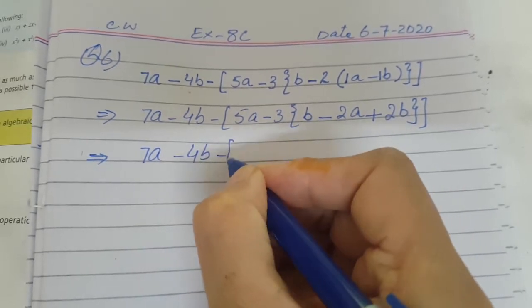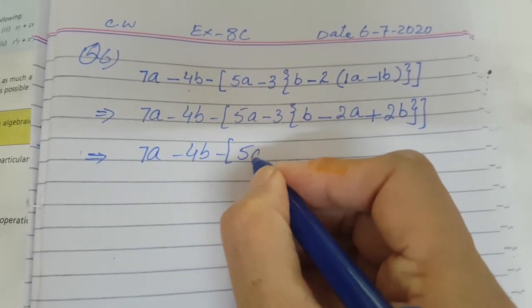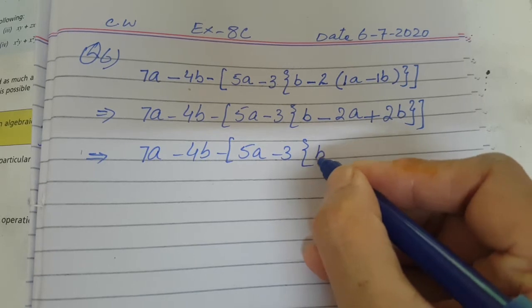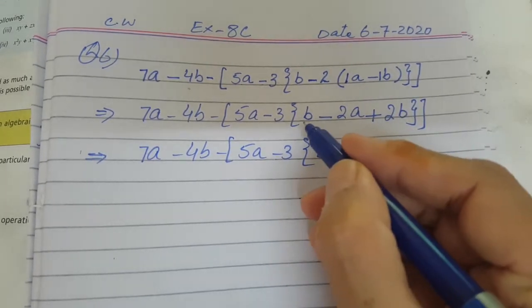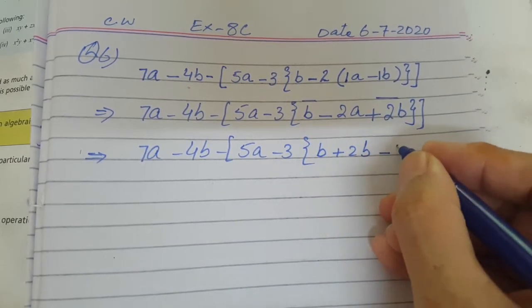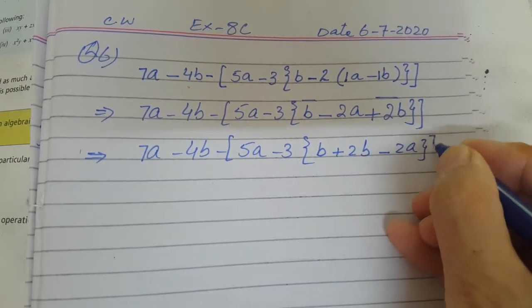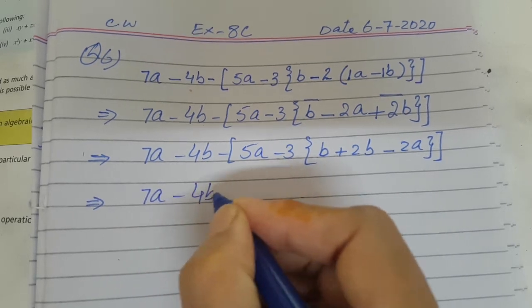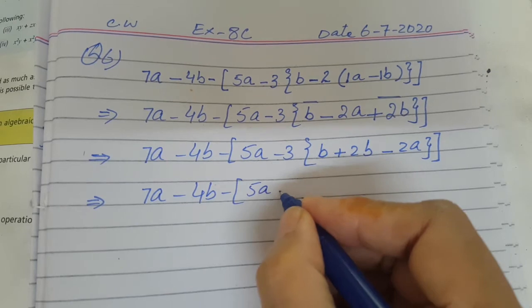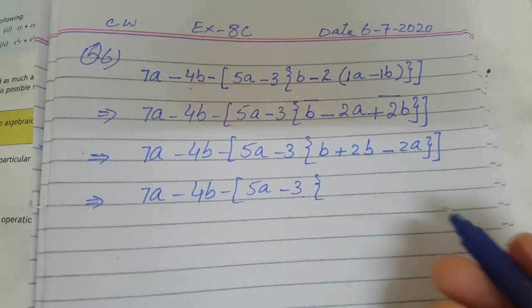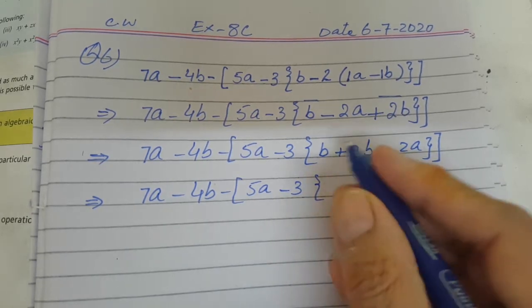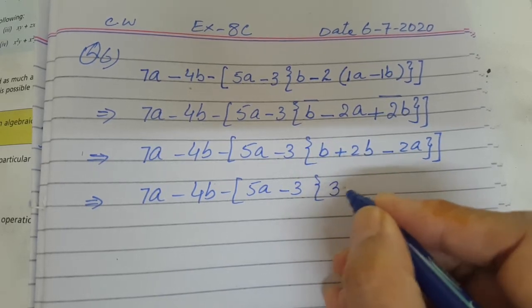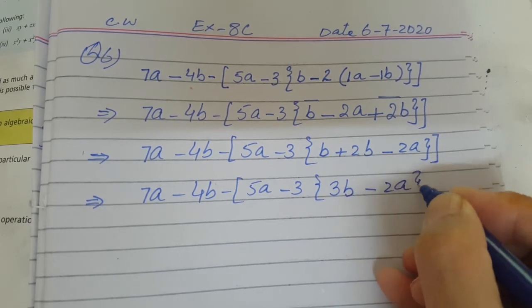In the next step: 7a minus 4b minus square bracket 5a minus 3 — now inside the braces we look for like terms. Yes, we have b and plus 2b as like terms. We arrange all terms: 1b plus 2b gives 3b, and minus 2a remains. So inside the braces we now have 3b minus 2a.